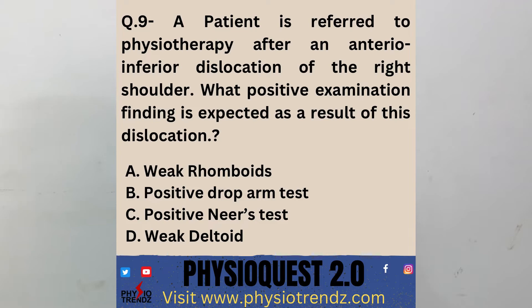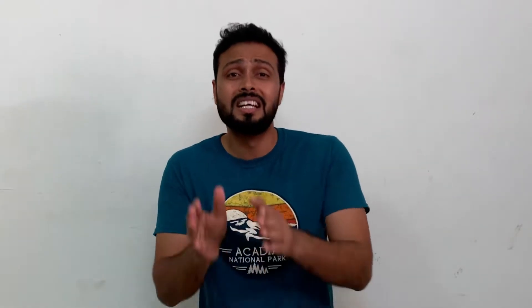In this week's question number nine, the information given to us is that a patient is diagnosed with anterior inferior dislocation of the right shoulder, and the physiotherapist has to find out what other associated injuries might be present. The simple information is that there is an anterior inferior dislocation of the shoulder, which means the head of the humerus has rotated anteriorly — which mostly happens because of external rotation — and then shifted downward. We have to find out what other associated injuries can be present.